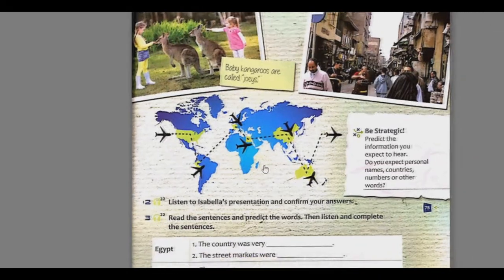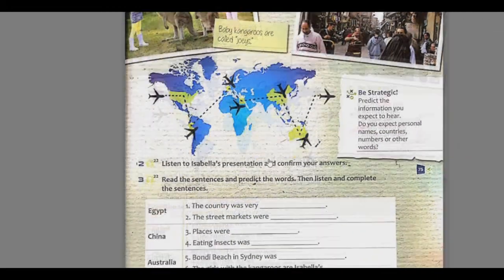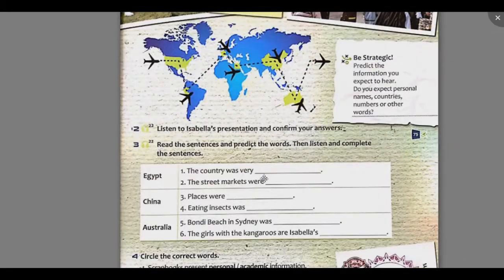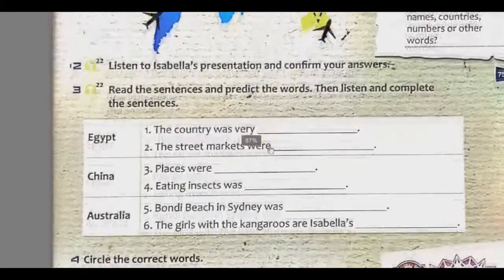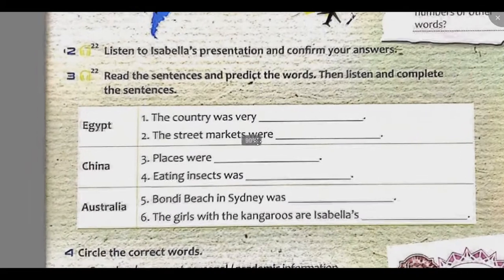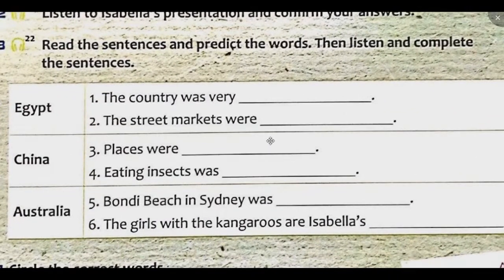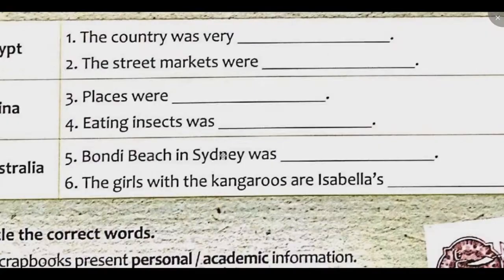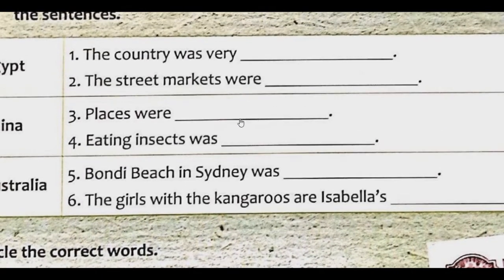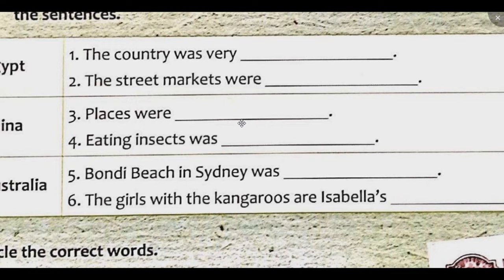Seguidamente, leeremos las oraciones del ejercicio 3. Trataremos de descifrar las palabras que completan las oraciones. Ahora escuchemos el audio y completamos las oraciones. Track 22.